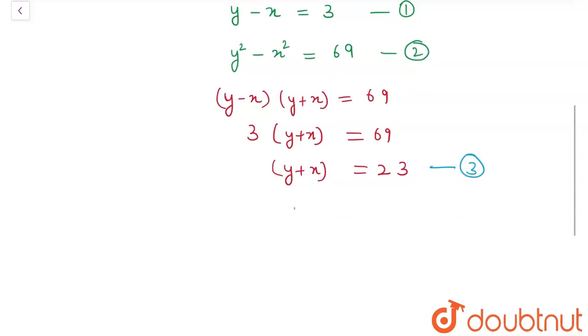Now I will add my equation number one and equation number three. So by adding these equations, I'll get two times y is equal to three plus 23. Therefore, my y will be equal to 26 upon two, which is equal to 13. Now let's name it equation four.